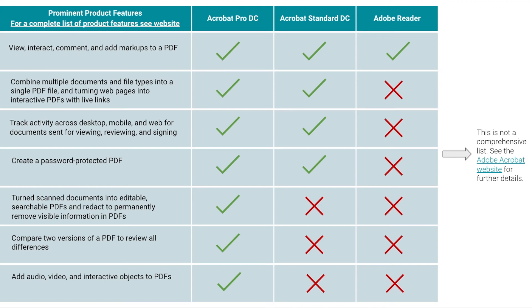You can track activity across desktop, mobile devices, and the web for documents for viewing, reviewing, and signing — that's Pro and Standard. You can create a password-protected PDF — also both Pro and Standard. Things specific to Adobe Acrobat Pro DC are: turning scanned documents into editable searchable PDFs, redacting to permanently remove visible information in PDFs, comparing two versions of a PDF to review all the differences, and adding audio, video, and interactive objects to a PDF.